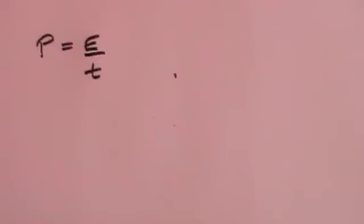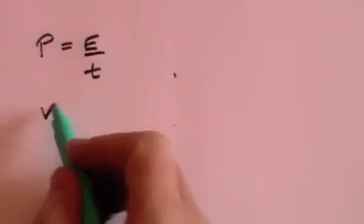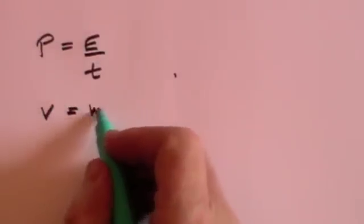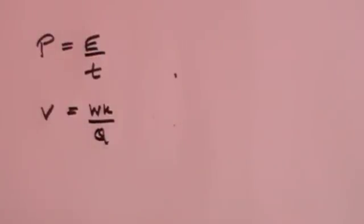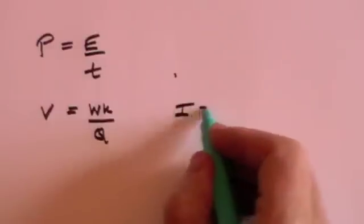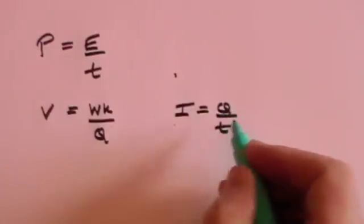Power is the amount of energy divided by the time that that energy is provided. I just want to remind you of two other formulae that we've already derived in this series on electricity. We defined a volt as the work done moving a charge. We also defined the current as being the charge moved over time.